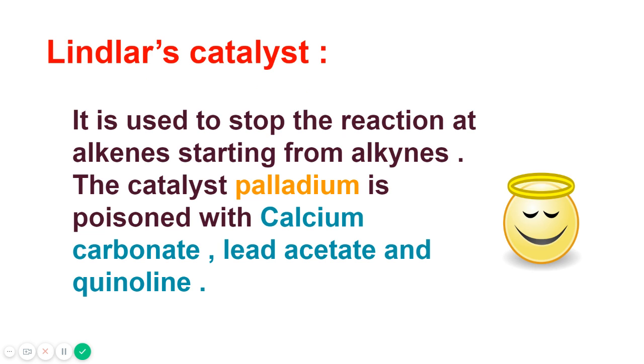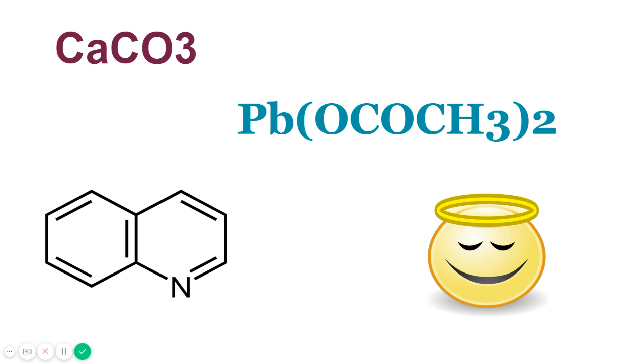Now let's see what Lindlar catalyst is. It is used to stop the reaction at alkyne starting from alkynes. The catalyst uses palladium and it is poisoned with calcium carbonate, lead acetate, and quinoline. Let's see the formulas. Calcium carbonate, lead acetate, and quinoline, they poison the catalyst. So the effectiveness is diminished. The effectiveness of the catalyst, that is palladium, is diminished.